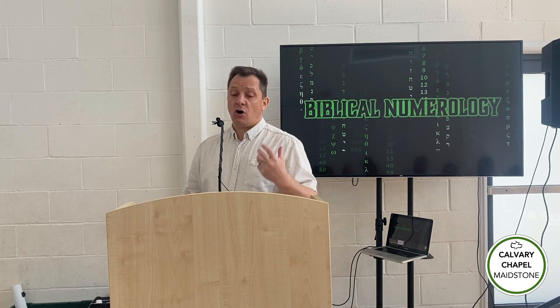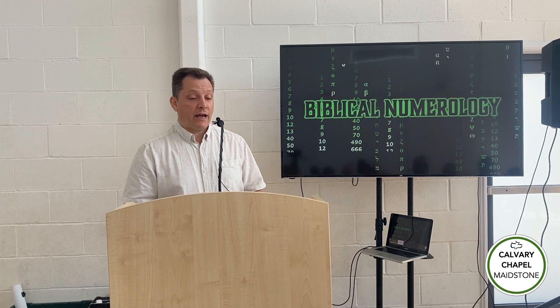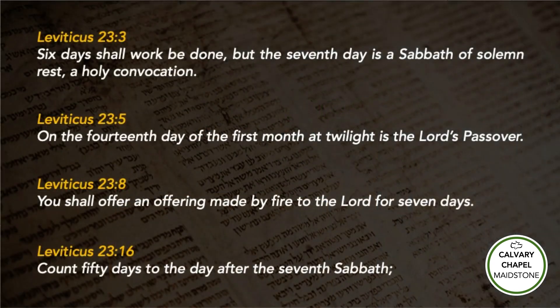Numbers are important to God. God created numbers and counting. He gave us numbers to use and the Lord very specifically took six days to create the world and then rested on the seventh. When he instituted the law of Moses he used the creation as a method of establishing the Sabbath — six days you shall work but on the seventh day is a Sabbath of solemn rest. And when God created the sun and the moon it was so times and seasons could be fixed, and times and seasons are calculated using numbers.